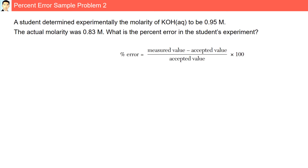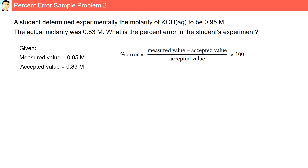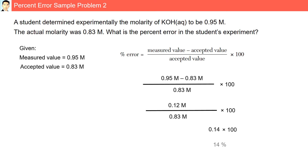Percent error sample problem 2. A student determined experimentally the molarity of KOH, potassium hydroxide, to be 0.95 molar. The actual molarity was 0.83 molar. What is the percent error in the student's experiment? The measured value is 0.95 molar and the accepted value is 0.83 molar. Substituting into our formula, the percent error is 14%.